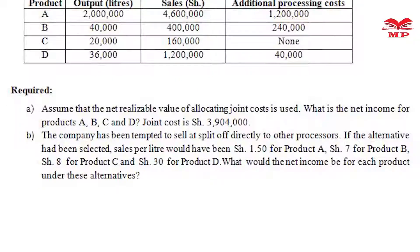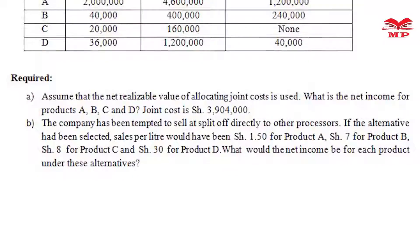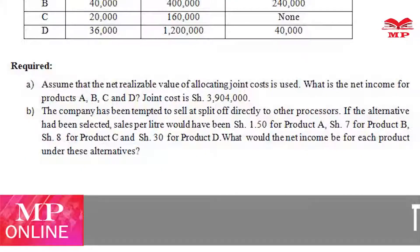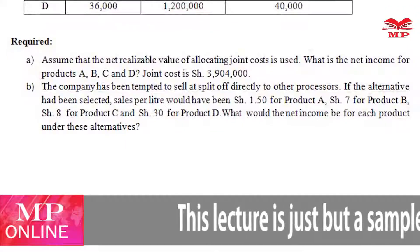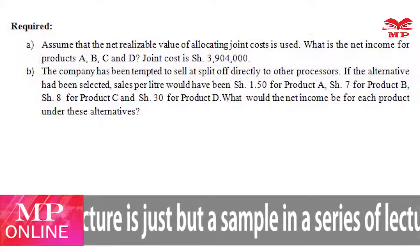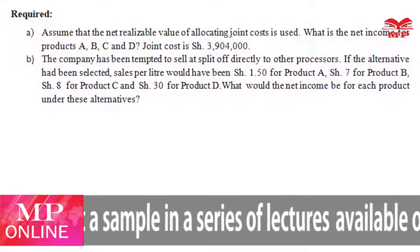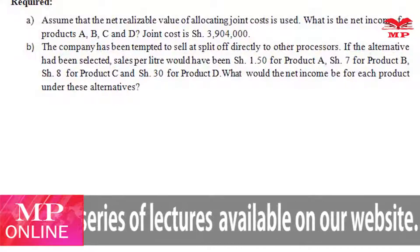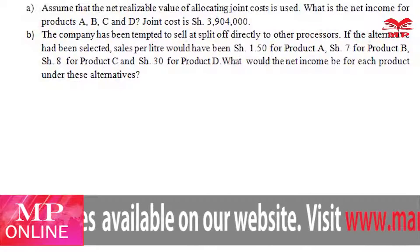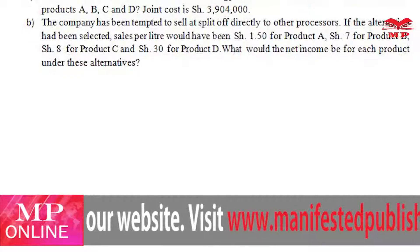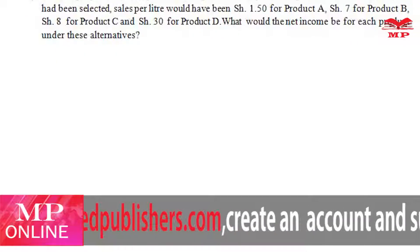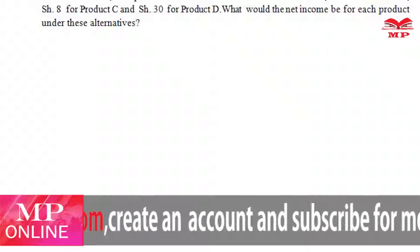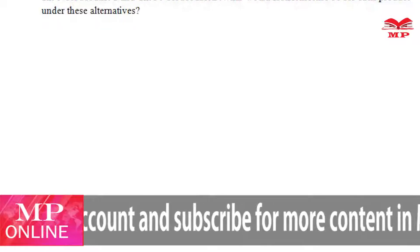Required. Number A: assume that the net realisable value method of allocating joint cost is used. What is the net income of products A, B, C, and D? Joint cost is 3,904,000. Part B: the company has been tempted to sell at split-off directly to other processors. If that alternative had been selected, sales per liter would be shillings 1.5 for product A, shillings 7 for product B, shillings 8 for product C, and shillings 30 for product D. What would the net income be for each product under these alternatives?